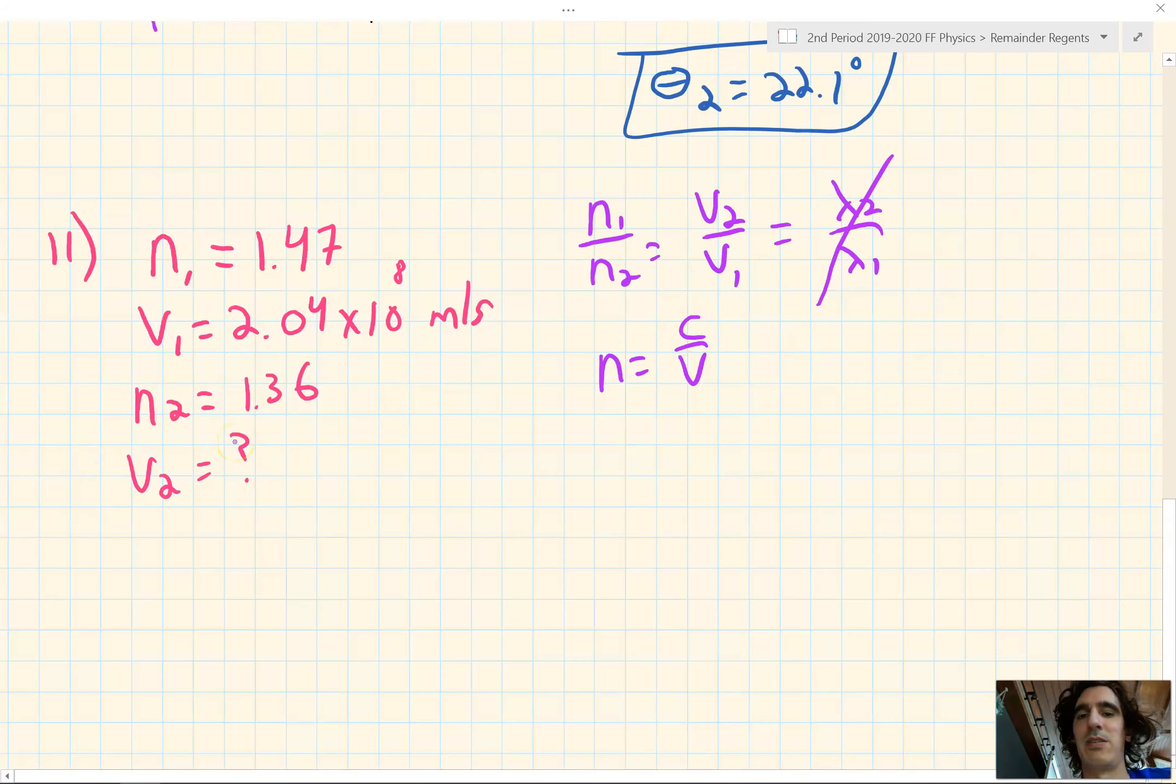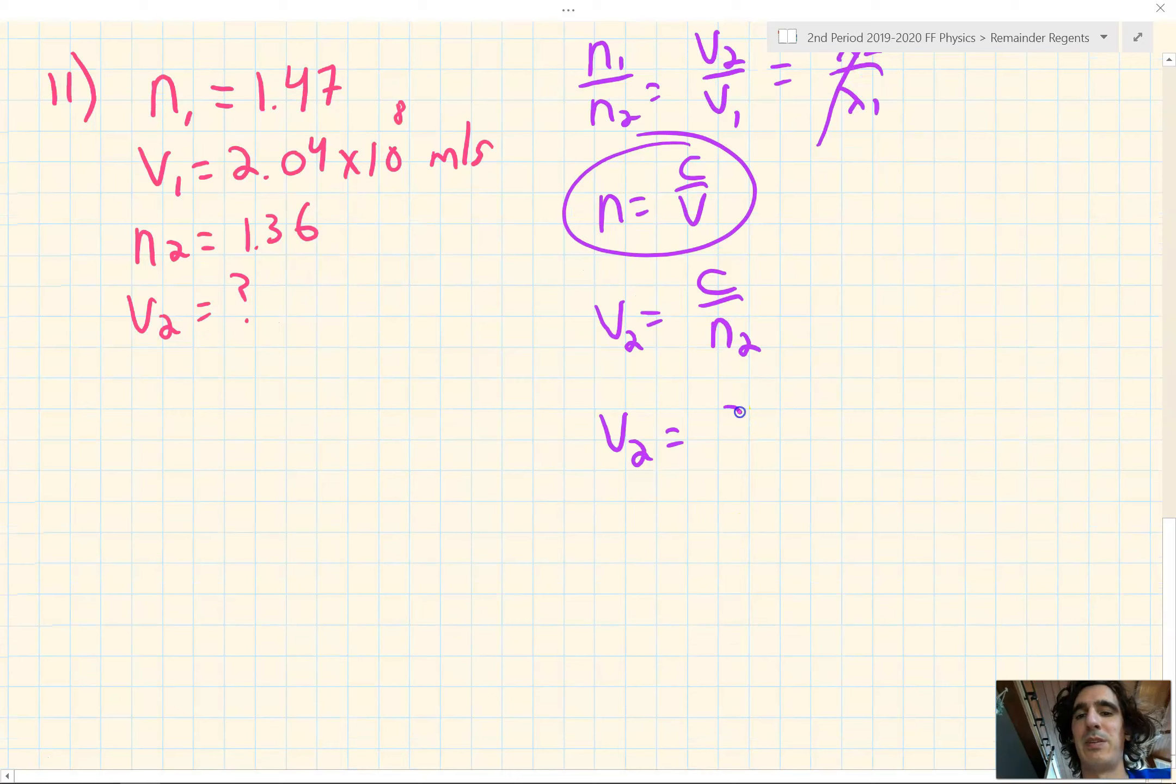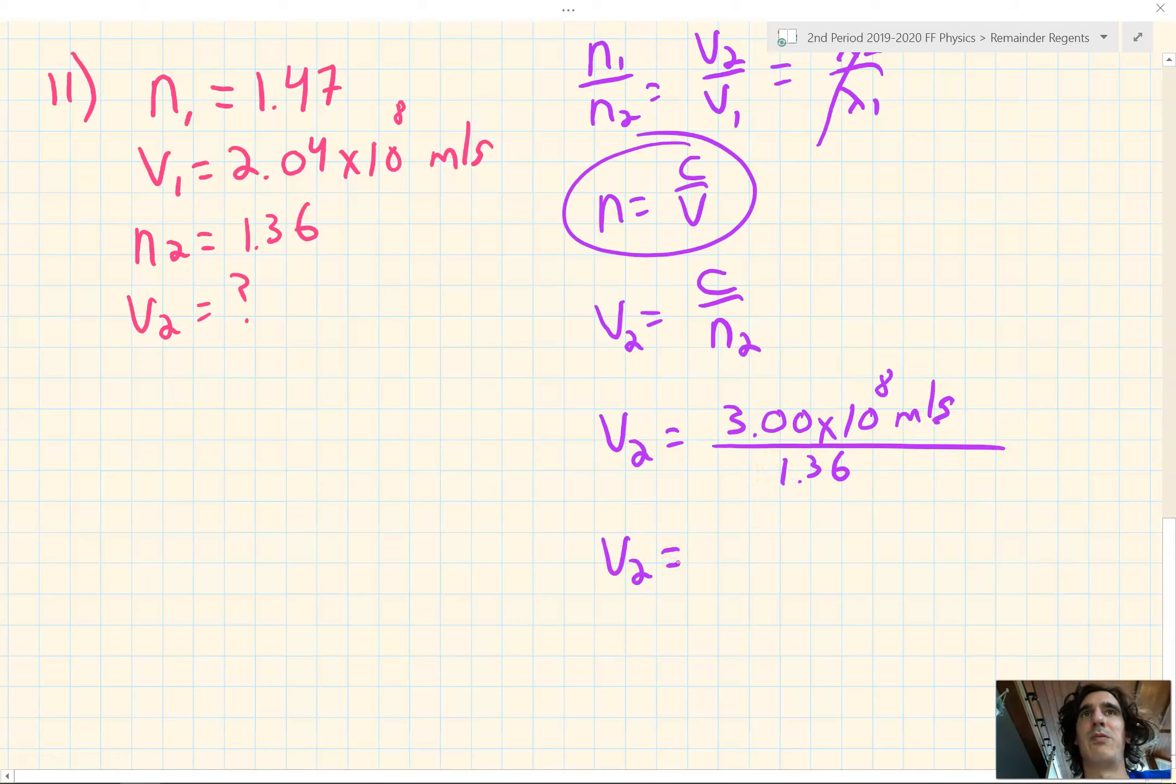So first we'll do is get v by itself. We'll multiply both sides by v, and then divide both sides by n. So v is equal to c over n. In this case, we're looking at v₂. So now we just plug and chug. c is the speed of light in a vacuum. That's 3.00 times 10 to the eighth meters per second, all over n₂, that's 1.36. Plug in our calculator so we get v₂ to be 2.21 times 10 to the eighth meters per second.